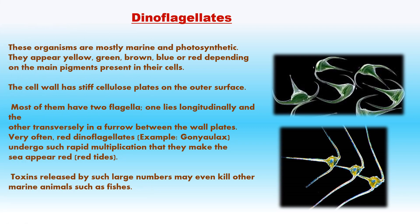Dinoflagellates are unicellular, mostly marine and photosynthetic organisms, next to diatoms as producers in oceans. They appear yellow, green, brown, blue or red depending on the main pigment present. Some are bioluminescent. The body is enclosed in a stiff cellulose wall divided into plates giving an armored appearance. They usually have two unequal flagella — one longitudinal and one transverse. Red dinoflagellates like Gonyaulax undergo rapid multiplication and cause blooms making the sea appear red (red tides). Toxins released kill marine animals including fish. Examples: Gonyaulax, Gymnodinium.